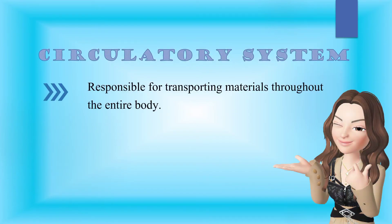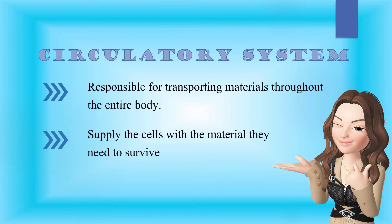The circulatory system is responsible for transporting materials throughout the entire body. It transports nutrients, water, and oxygen to the billions of cells composing the multicellular body. It also heals and fights infections, and at the same time, it removes waste from the body. The circulatory system functions as an intricate highway that travels throughout the entire body, supplying the body cells with the materials they need to survive.